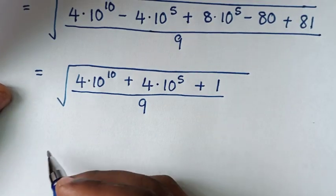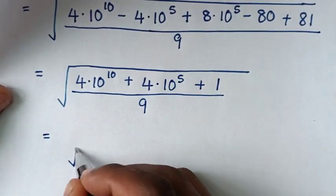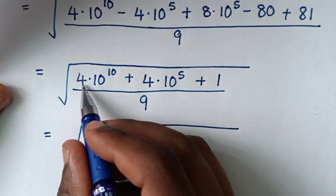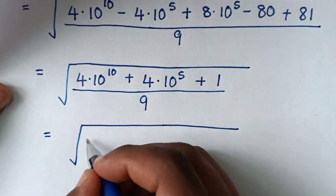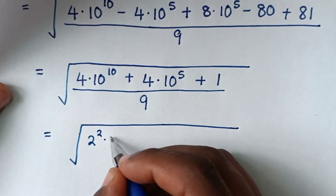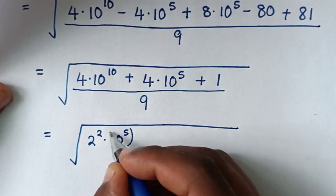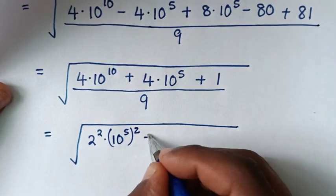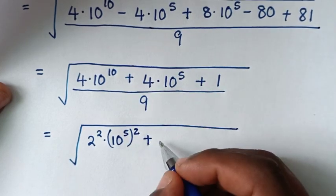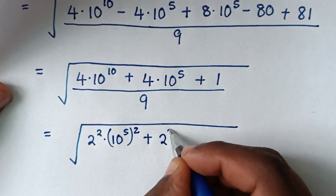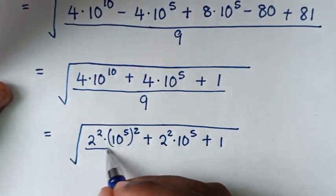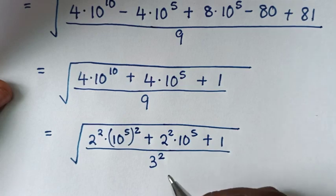In the next step it will be equal to the square root of: 4 is the same as 2 squared; 10 to the power of 10 is the same as (10 to the power of 5) squared. Then plus 4 times (10 to the power of 5) plus 1, all over 9, which is 3 squared.